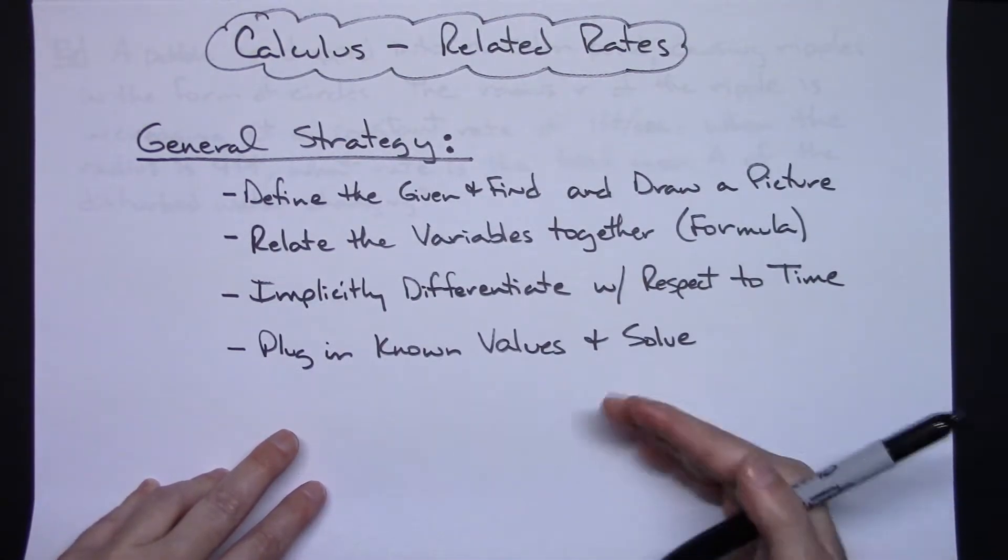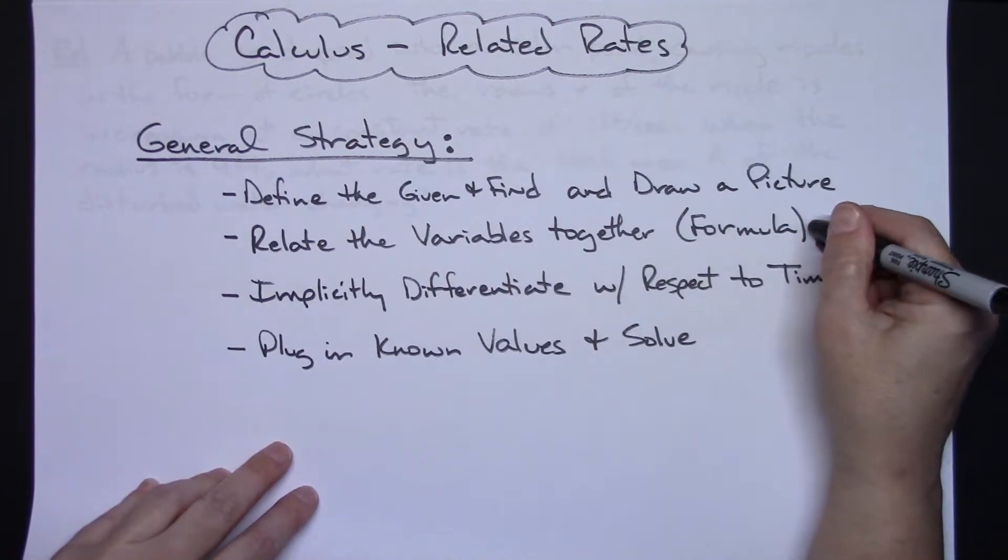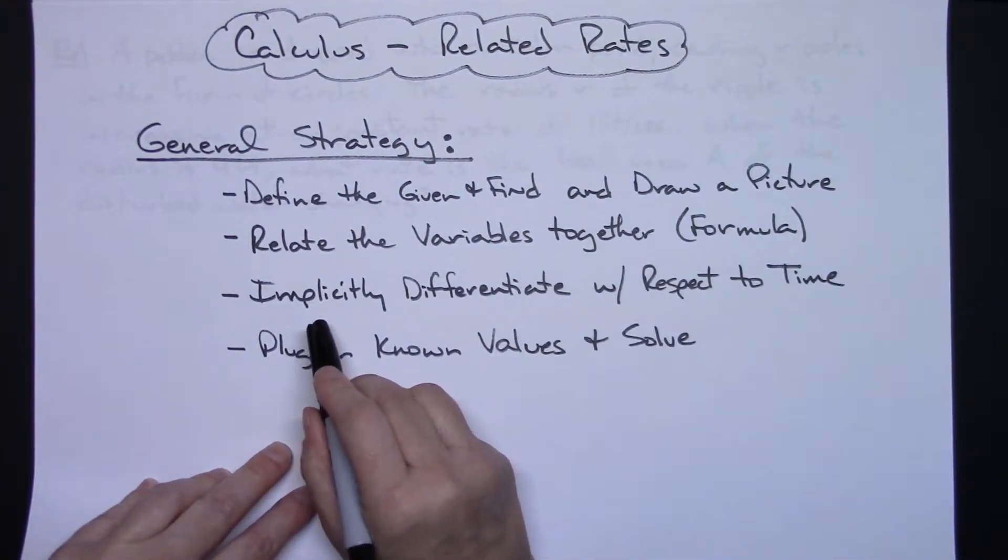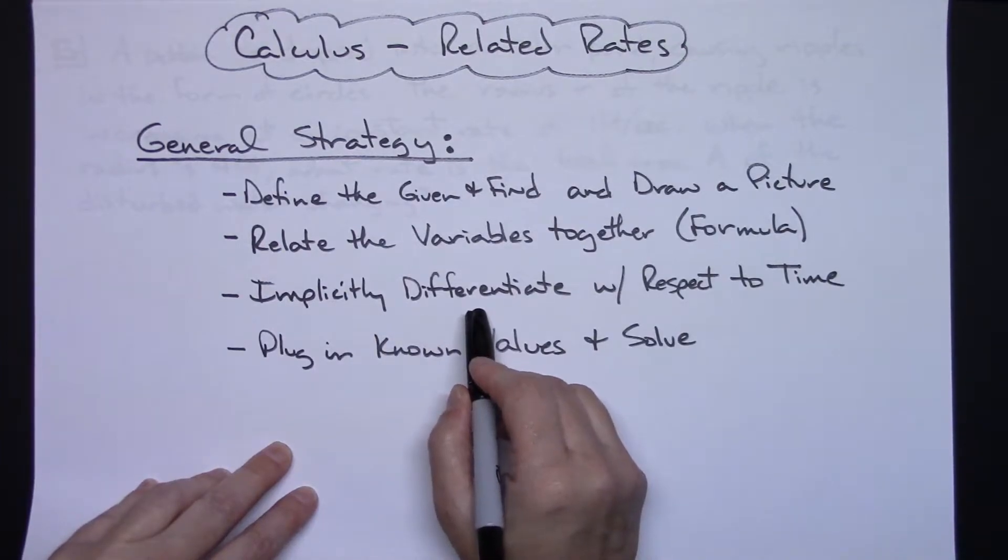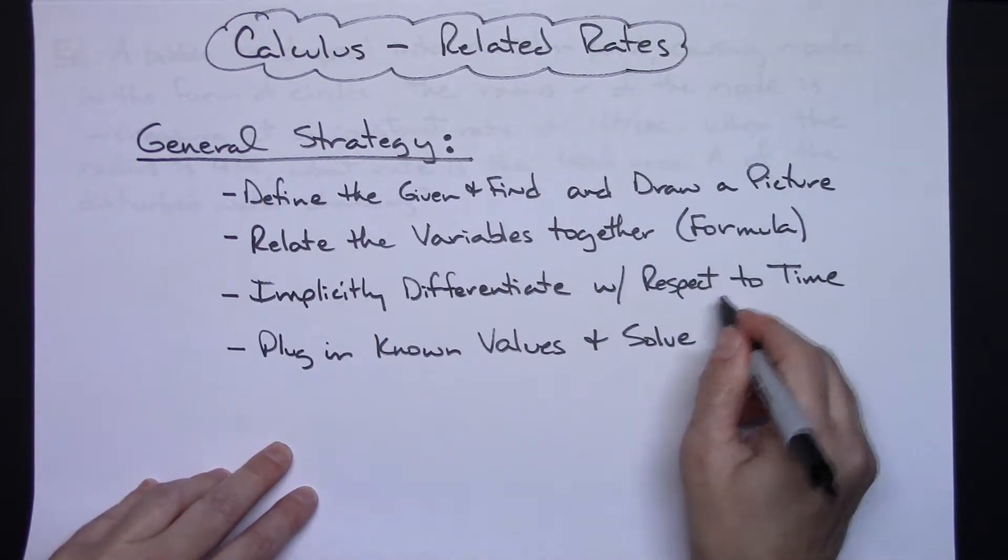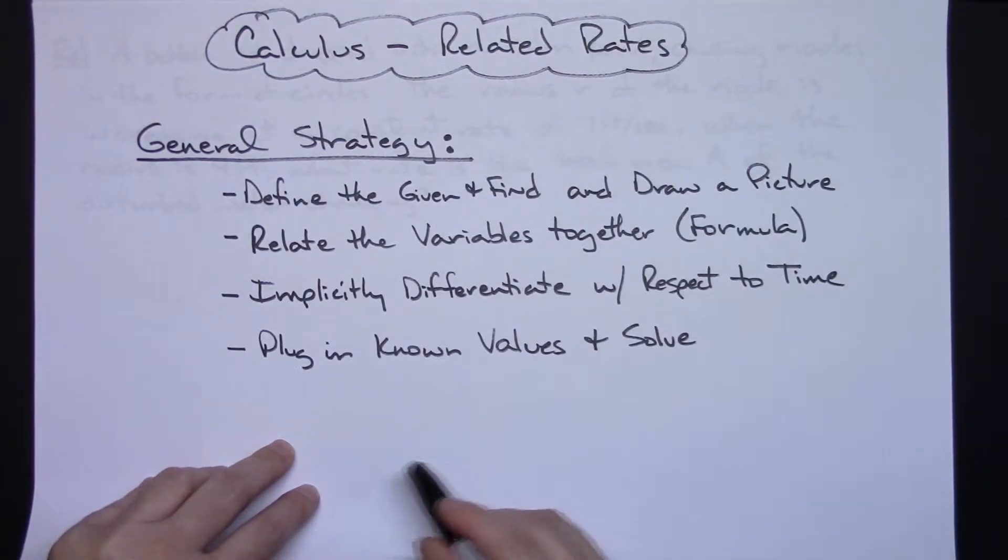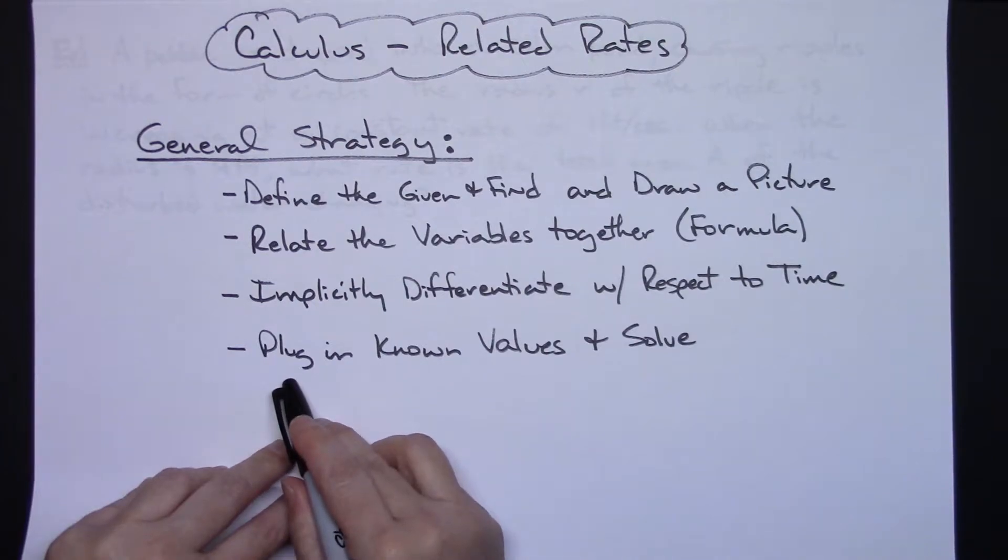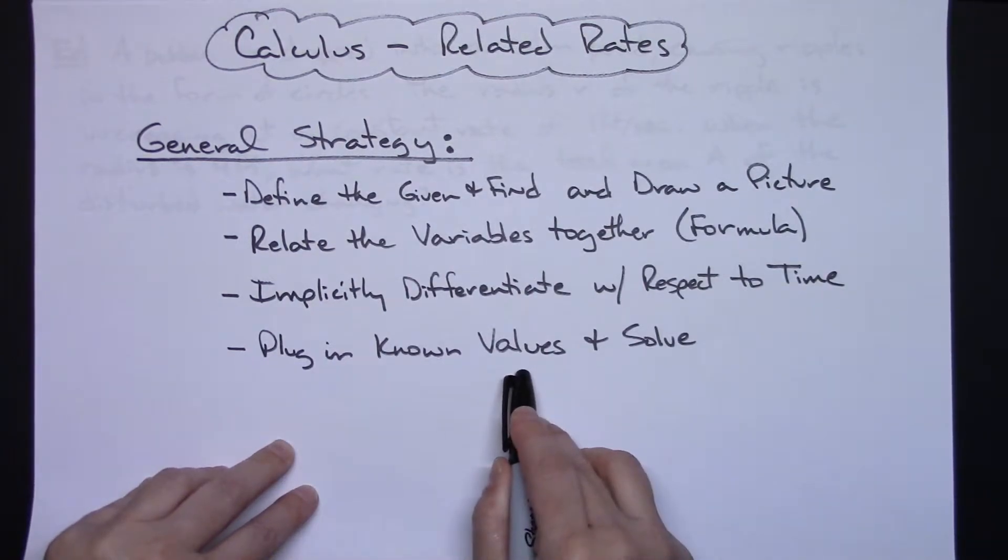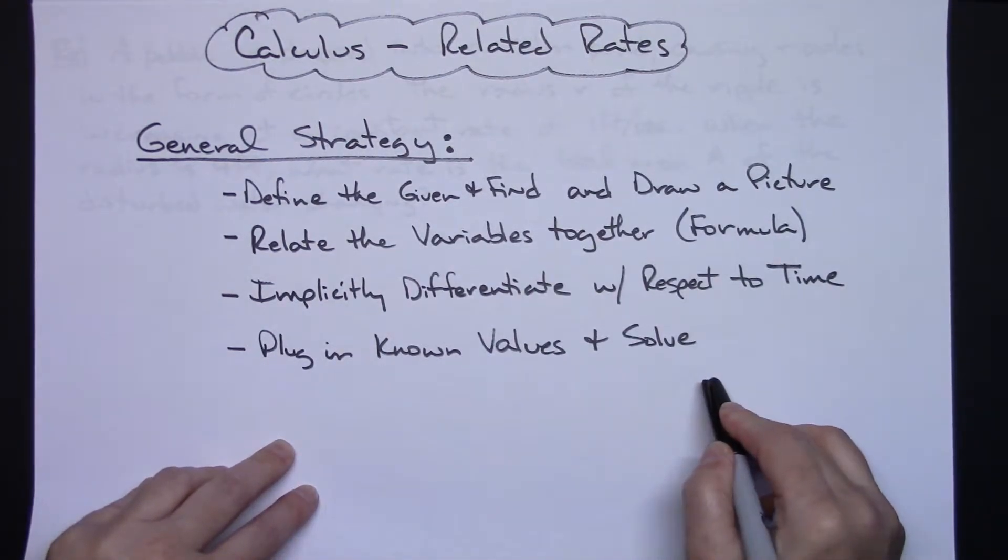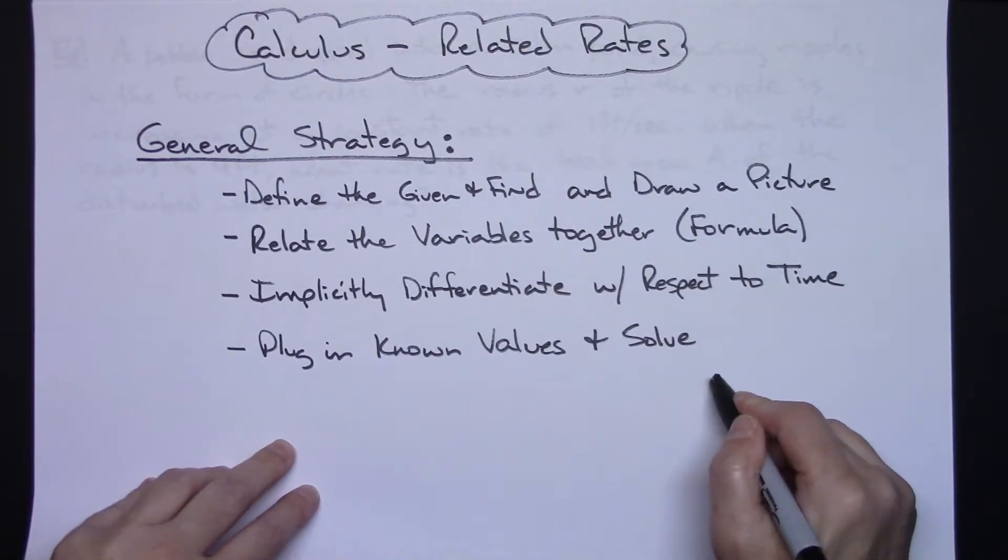What are you given, what are you trying to find, what formula are you going to focus on in the problem because that formula is then the formula that you're going to differentiate. You're going to use implicit differentiation and it's going to be with respect to time. So you're going to be implicitly differentiating with respect to time and then you're going to work it out, simplify, you will get down to the place where you plug in your known values and then ultimately solve the equation that you have and that will be the answer to your related rates problem.